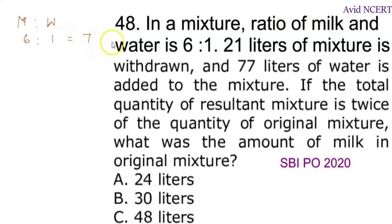The total part here is 7 parts. It's a mixture and we don't know the amount of mixture, so let's take it as x. 6x is to 1x, so the total part which is 6 + 1x equals 7x. 21 liters of mixture is withdrawn, so out of this total part of mixture 7x, 21 liters is withdrawn.